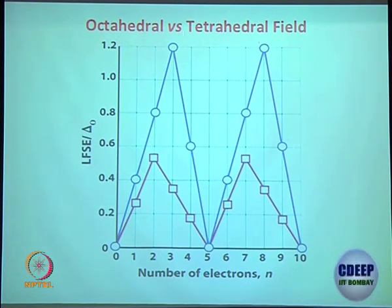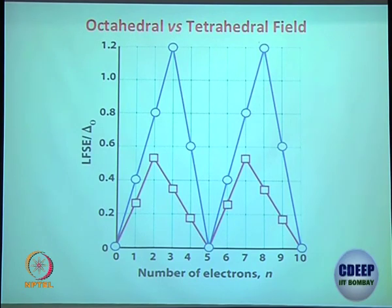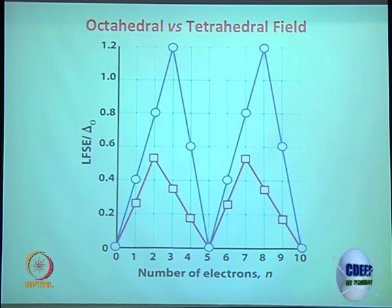Since delta_t is always less than delta_0, you almost never see a low-spin case for tetrahedral complexes — the splitting is too small, so you always end up with high spin. Never calculate tetrahedral for low spin. When comparing octahedral and tetrahedral stability directly — for D1 octahedral high spin versus D1 tetrahedral high spin — you have to normalize the tetrahedral value with 4/9 of delta_0.